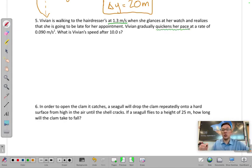Vivian gradually quickens her pace, so this phrase right here means that she is accelerating, right? She is changing her velocity at a rate of 0.090 meters per second squared.